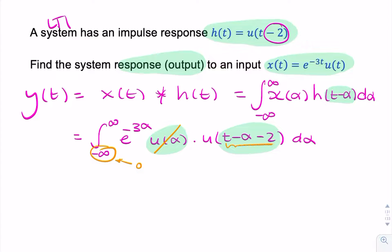And similarly, if you say t minus alpha minus 2 equals 0, so alpha equals t minus 2, that would change this limit to t minus 2. And then we wouldn't need to worry about it, because it would just be 1.